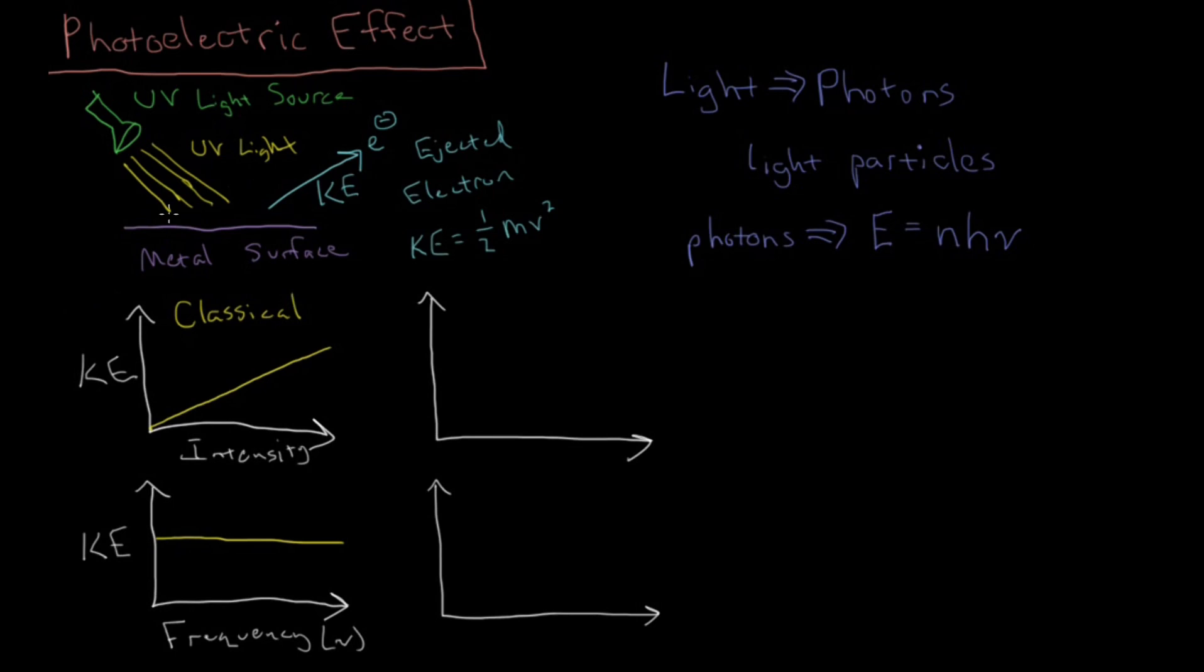Where this n, again, just as in the previous video, is some integer that we'll denote like this, n belonging to the set of integers. So this is a quantum hypothesis because Einstein is saying that there is some quantization of light, that light is composed of particles which have a minimum size and can be no smaller, and there is a discrete number of them.